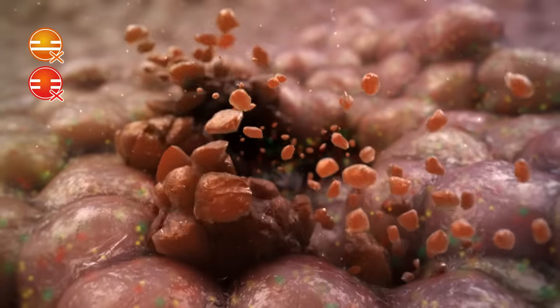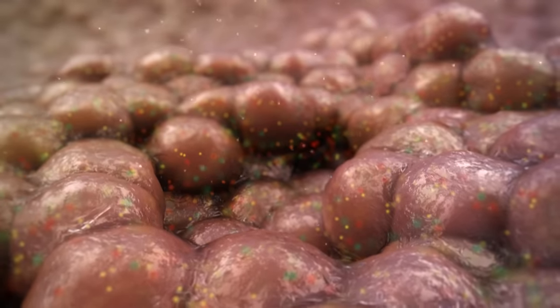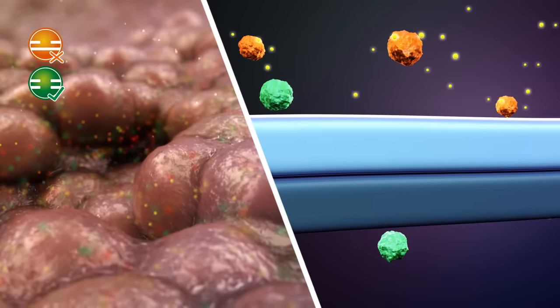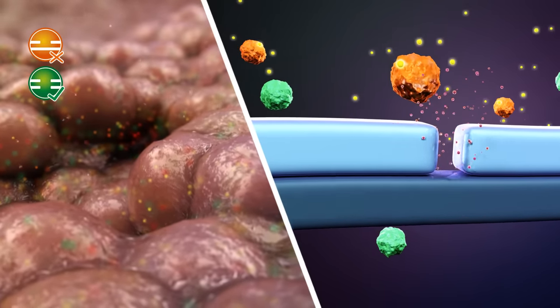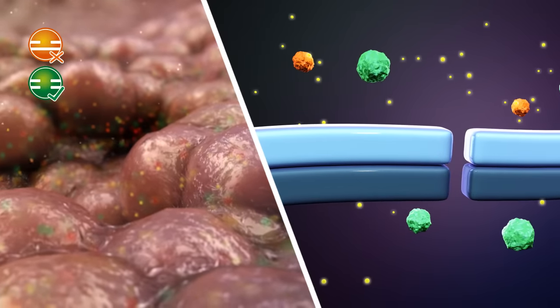In the surrounding healthy cells, the repair mechanism of single strand breaks is also inactivated by the PARP inhibitor. These cells, however, still have active BRCA1 proteins, which repair the double strand breaks and allow the cells to survive.